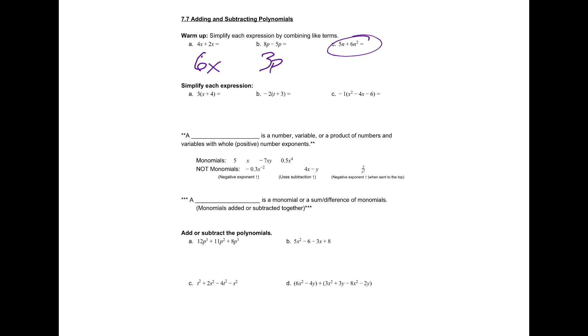And for c, this is actually going to be as simplified as possible. So we would just say our final answer is, preferably we'd put the n squared first. That's our final answer. The reason we can't add those is because one is an n, and one is an n squared.